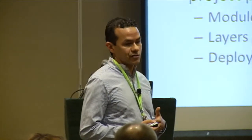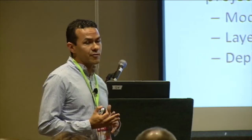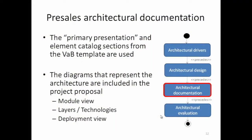With respect to architectural documentation, once architects complete the design, they document the architecture. Given the short timeframe, we just took from the views-and-beyond template the primary presentation and the element catalog. The views documented are the module view to show the estimation components, the layers-and-technologies view showing the reference architecture with selected technologies, and the deployment view. These views are actually included in the technical proposal given to the customer.